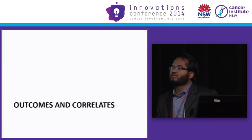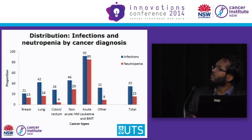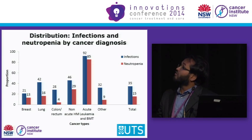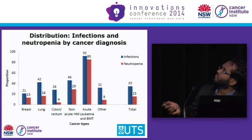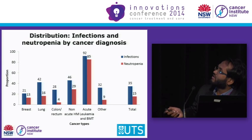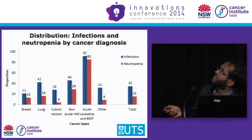Let's look at the outcomes — by outcomes, we mean neutropenia and infections. In our study population, around 35% of the total had at least one infection, and 15% had neutropenia. Infections and neutropenia are most common in acute leukemia, as high as more than 90% of those patients. However, though there are similar proportions of infections in lung cancer and non-acute leukemia, neutropenia is almost twice as likely in non-acute hematological malignancy compared to lung cancer.